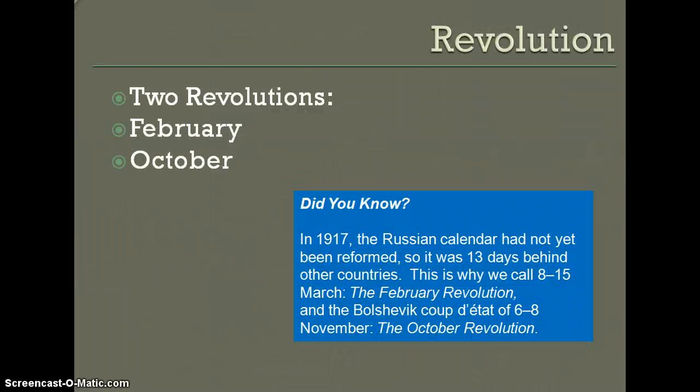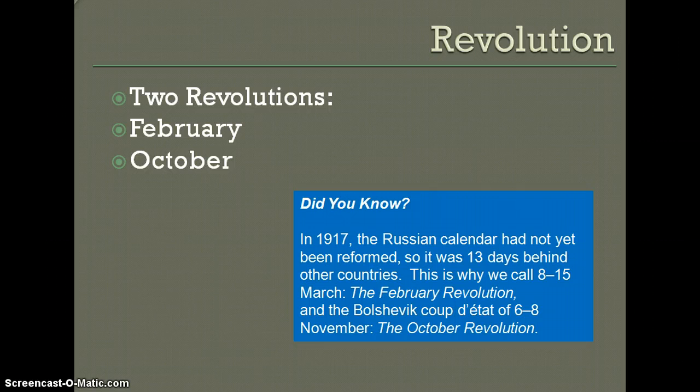All these causes began to ignite the Russian Revolution. There were two revolutions in 1917: February and October. Some history books list them as March and November because the Russian calendar had not yet been reformed in 1917 and was 13 days behind other countries. That is why we call 8 to 15 March the February Revolution and the Bolshevik takeover of 6 to 8 December the October Revolution.